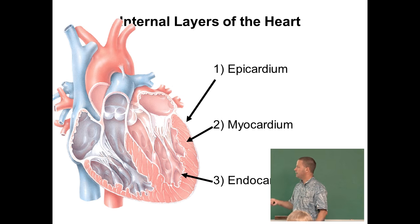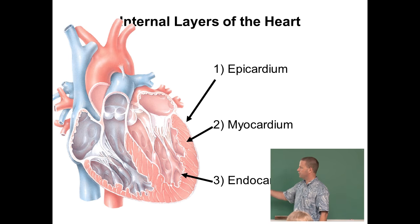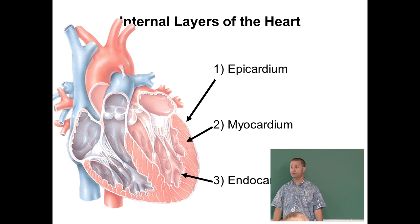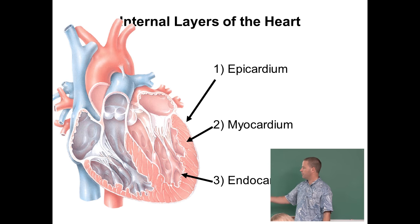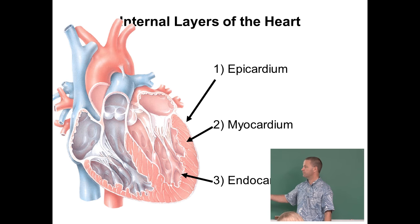If we remove the pericardium, on the outside of the heart we have the epicardium. The inner layer is called the myocardium — 'myo' meaning muscle — so it's made up of cardiac muscle. Then the endocardium lines the inside, covered with epithelial tissue, which is important so we don't have reactions with platelets as they pass through.